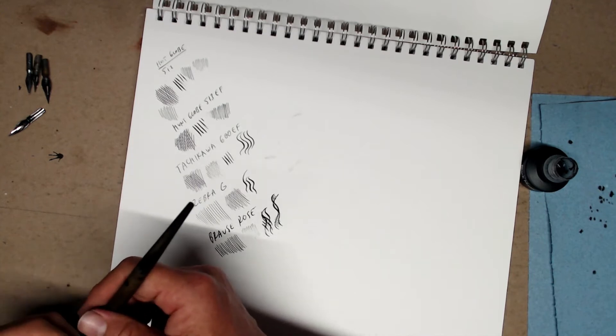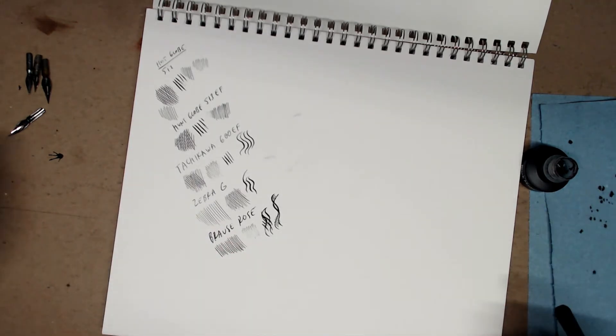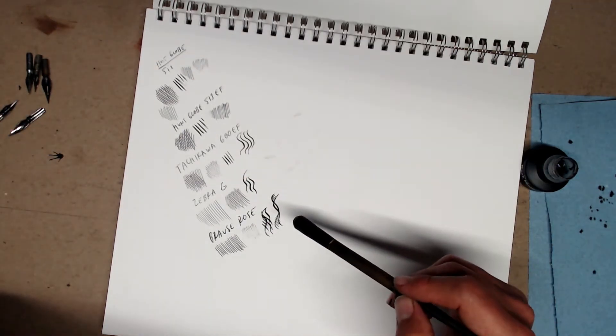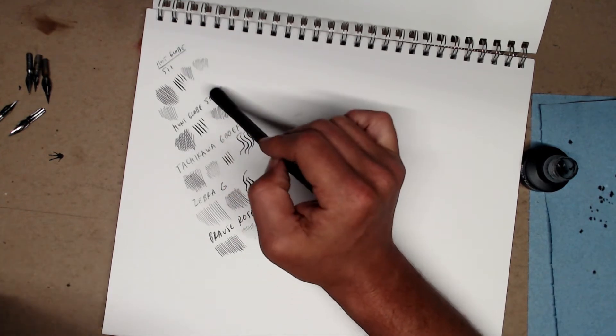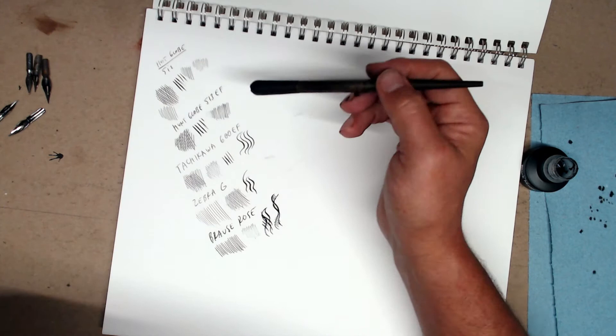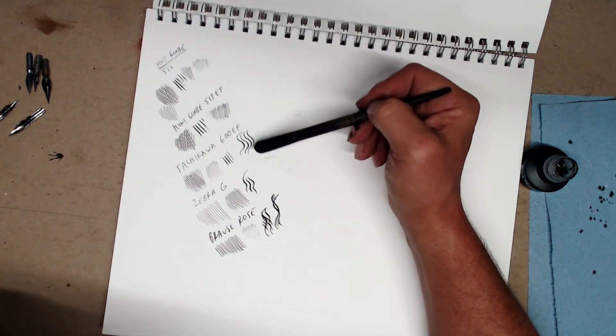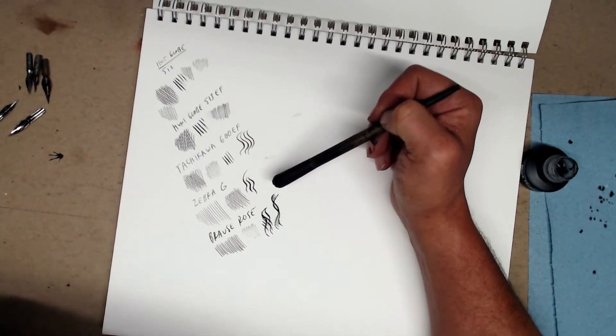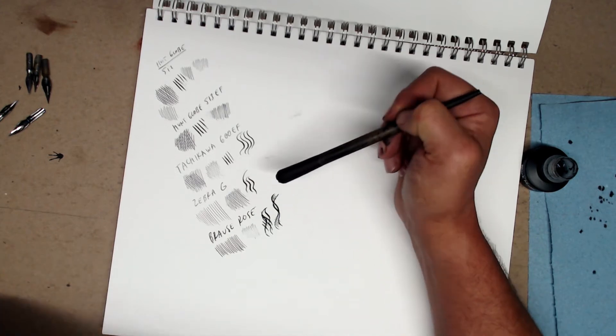Look, there are dozens of different nibs on the market. Just in my collection alone, I probably have 12 different kinds of nibs. But here are the five main nibs you should be familiar with. Definitely get the first two. And then, if you want, if you're curious, if you want to explore the world of dip nibs, get the Tachikawa 600EF Zebra G. And then, if you want a really juicy, expressive line, almost brush-like in quality, get the Browse Rose.